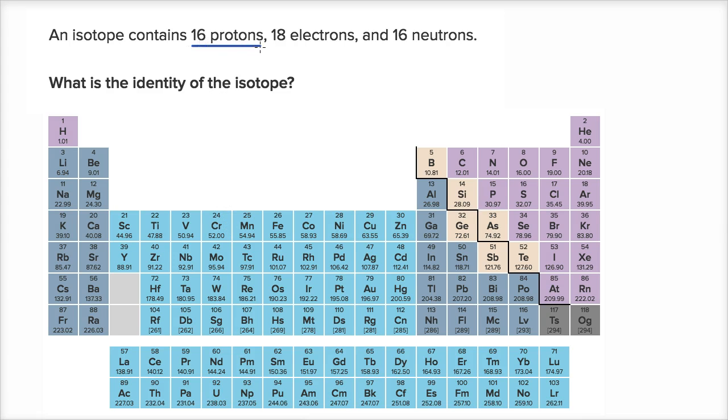So because it is 16 protons, we can go right over here to the atomic number. What has 16 protons? Well anything that has 16 protons by definition is going to be sulfur right over here. So I could write a big S.